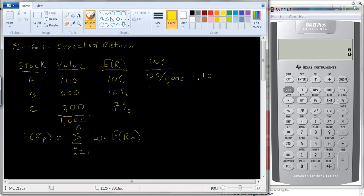Stock A makes up 10% of the portfolio. The second stock is $600 divided by the total value of the portfolio which is $1,000. And the last stock is $300 divided by $1,000 which is 30%. And if you add these up these should add up to 1.0. That is 100% of the securities make up the portfolio.